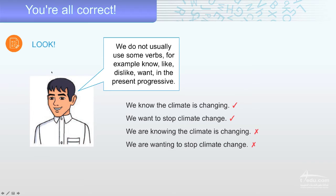Look. Now, we have a piece of grammar. Let's read it together. We don't usually use some verbs, for example: know, like, dislike, want, in the present progressive. Don't forget present progressive. Verb plus ing. Before it, the verb be. Verb be, the verb plus ing.